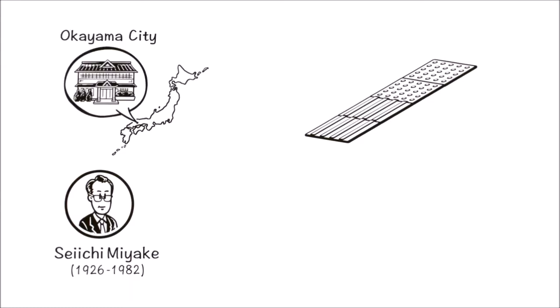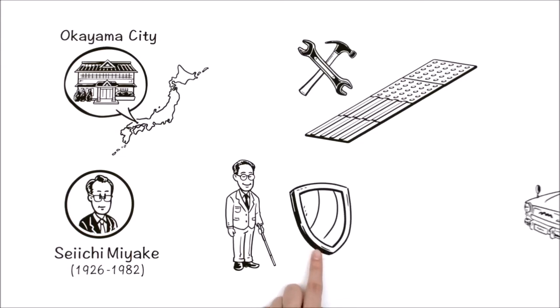It all started in Japan. Seichi Miyake, a hotel owner in Okayama City, had a close friend who was visually impaired. He developed these tiles to keep his friend safe on the streets.